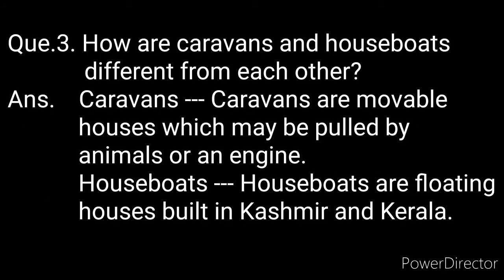Question number three: How are caravans and houseboats different from each other? Caravans aur houseboats ek dusre se alag kaisa hoti hain? Answer — Caravans: caravans are movable houses which may be pulled by animals or an engine. Caravans ko ek jagah se dusri jagah shift kiya ja sakta hai. Isse animals ya engine ki madad se khiincha ja sakta hai.